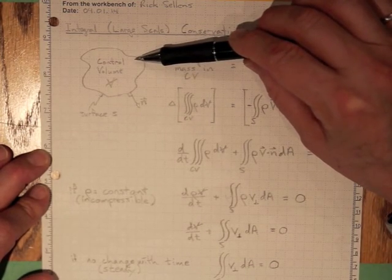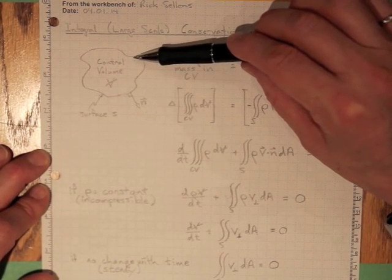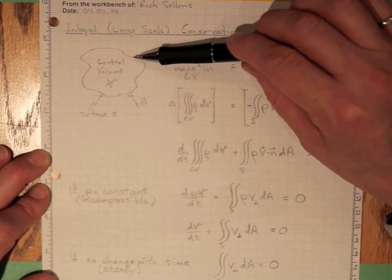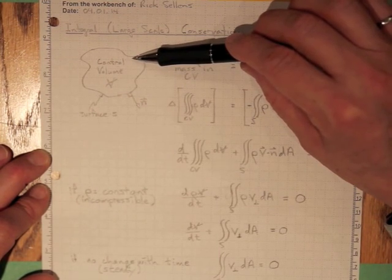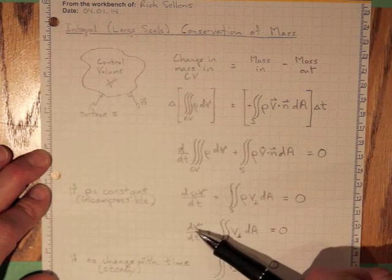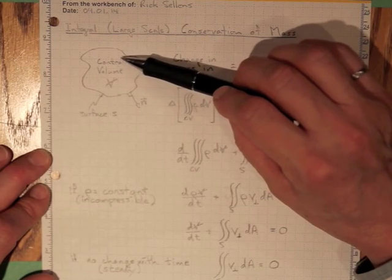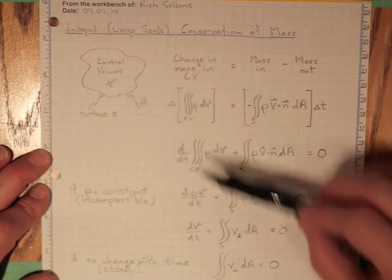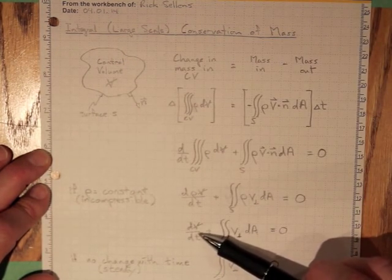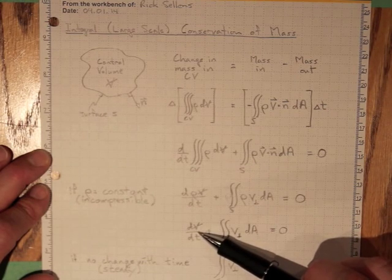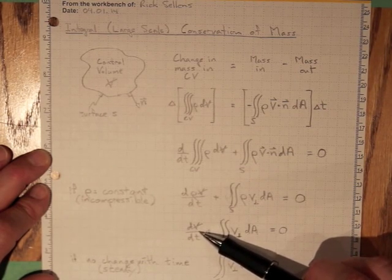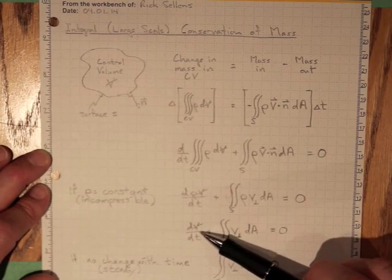Now, if this control volume is a completely Eulerian control volume fixed in space so it's not getting any bigger, then dV dt is equal to zero. If it's, for example, a balloon, it might be a control volume that's expanding with time and dV dt might be positive if it's expanding with time or negative if it's contracting with time.